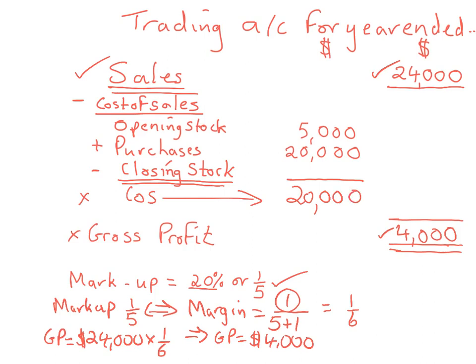Now we can work out closing stock. If we started with $5,000 of opening stock and purchased another $20,000, then in total at the beginning of and during the year we had $25,000 worth of stock. At the end of the year, if we only had $20,000 worth of cost of sales accounted for, then the closing stock must have been $5,000. $25,000 minus $5,000 closing stock gives us the cost of sales of $20,000 — so we've now worked out the value of the closing stock lost as a result of a theft or fire.